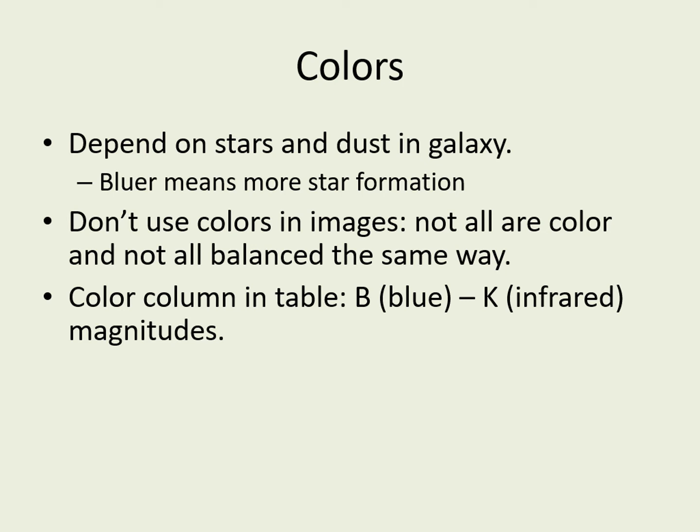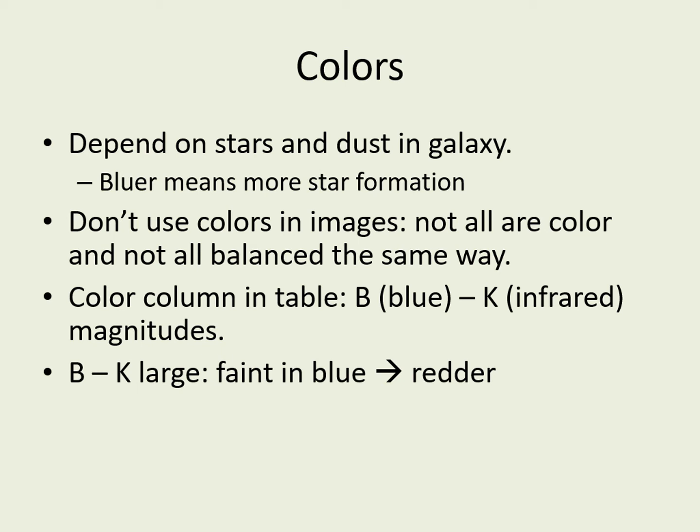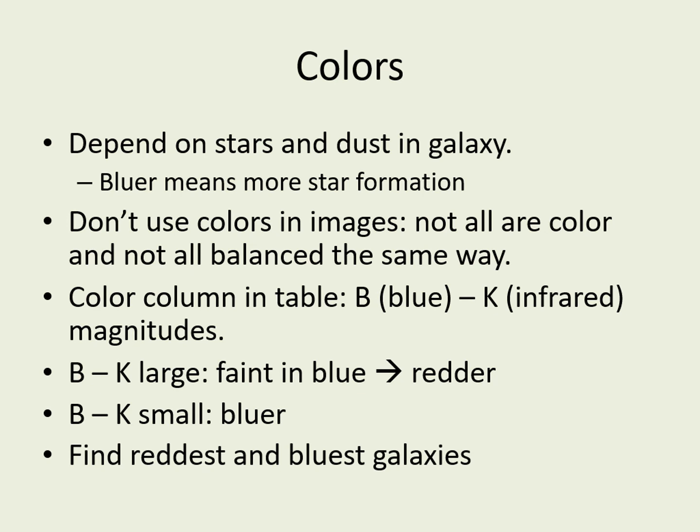This is a B minus K color, which means that the galaxy's magnitude in the B part of the spectrum is measured as well as the K part of the spectrum, and then those two values are subtracted. B is roughly the blue part of the spectrum, while K is in the near-infrared — longer wavelengths than red. A large B minus K color means that the B magnitude is a much bigger number than the K magnitude. But remember that magnitudes run backwards: a big number means a faint object. So if the B magnitude is large compared to K, that means the star isn't very bright in blue light compared to redder colors. The result is that a large B minus K color means a red galaxy, while a smaller value indicates a blue galaxy.